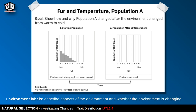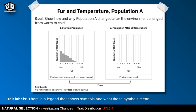We also want to note the environmental conditions labeled in the model. In the starting population, the environment is changing from warm to cold. After 50 generations, the environment is just cold. There are also trait labels: a positive S means the trait is likely to survive, and a negative S means it's less likely to survive.